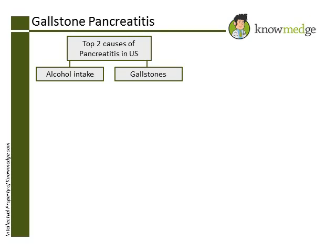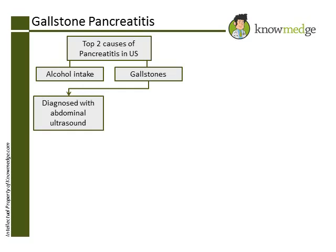Therefore, the next test to obtain at this time is Choice A — an ultrasound of the abdomen to look for gallstones and to see if there is dilatation of the common bile duct.